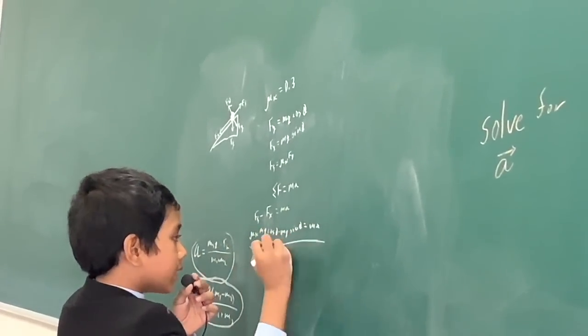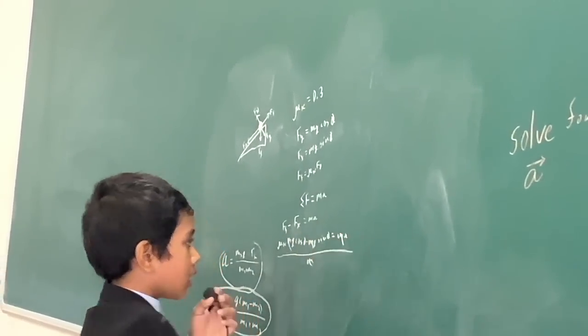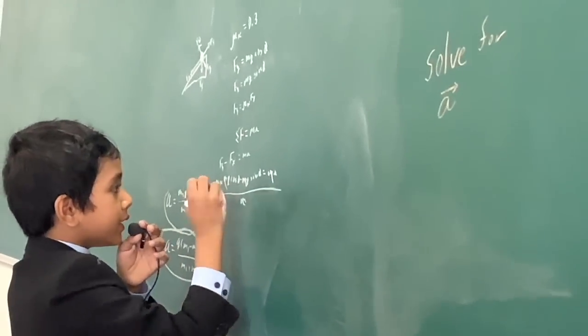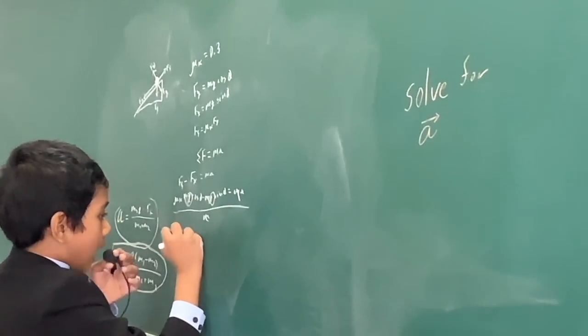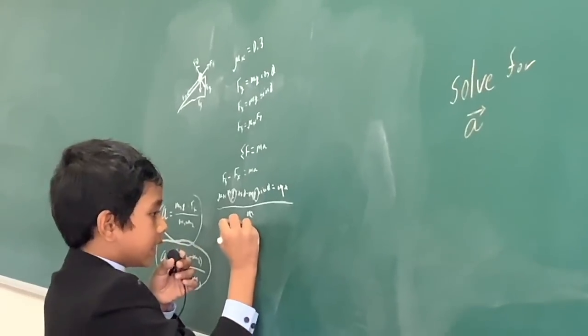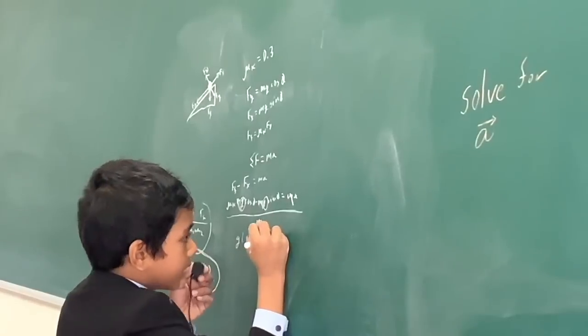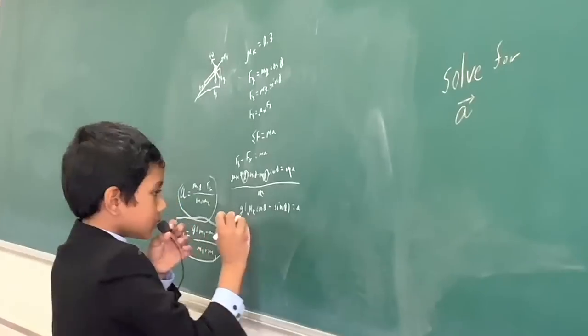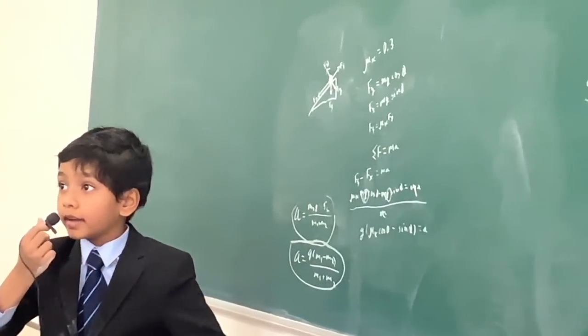Now, do you guys spot a common factor? That's right. It's M, the mass. We cancel out those two M's, thereby leaving us with mu K G cosine theta and then minus G sine theta. You don't have to.